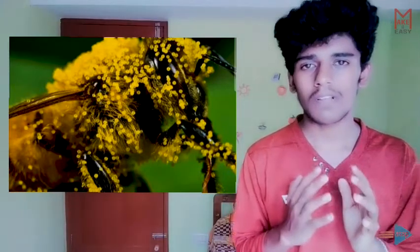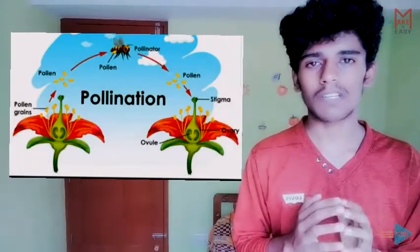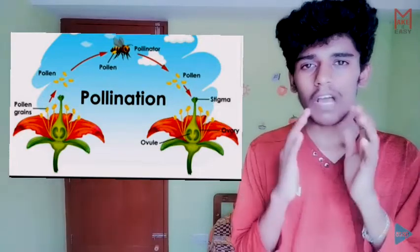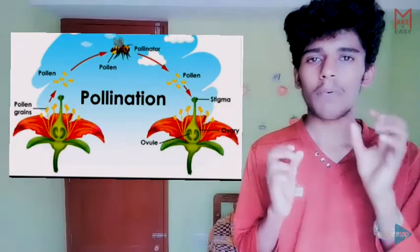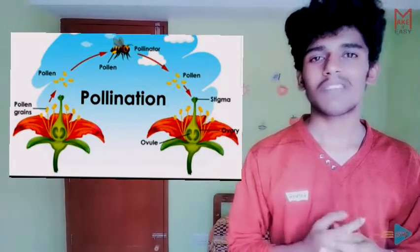In zoophily, plants have attractive flowers. For these attractive flowers, honey bees or butterflies come and pollinate. The pollen grains are sticky, which means they will stick to the insects and pollinate another flower of the same species. This is the zoophily method.